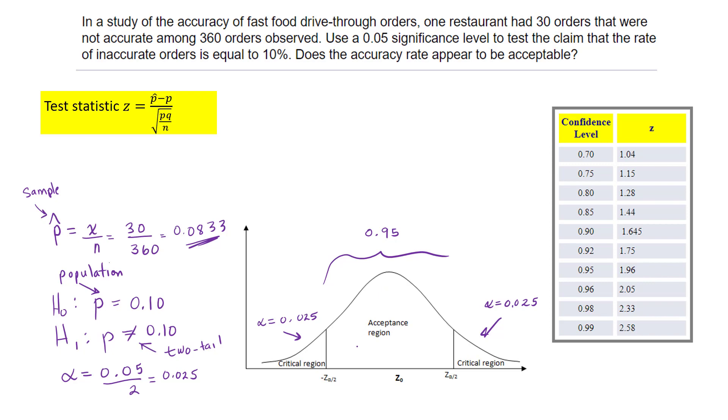To do this test based on critical values versus the test statistic, I can use this cheat table on the right. When looking up values in the table, remember you're reading from the bottom value all the way up to that value.